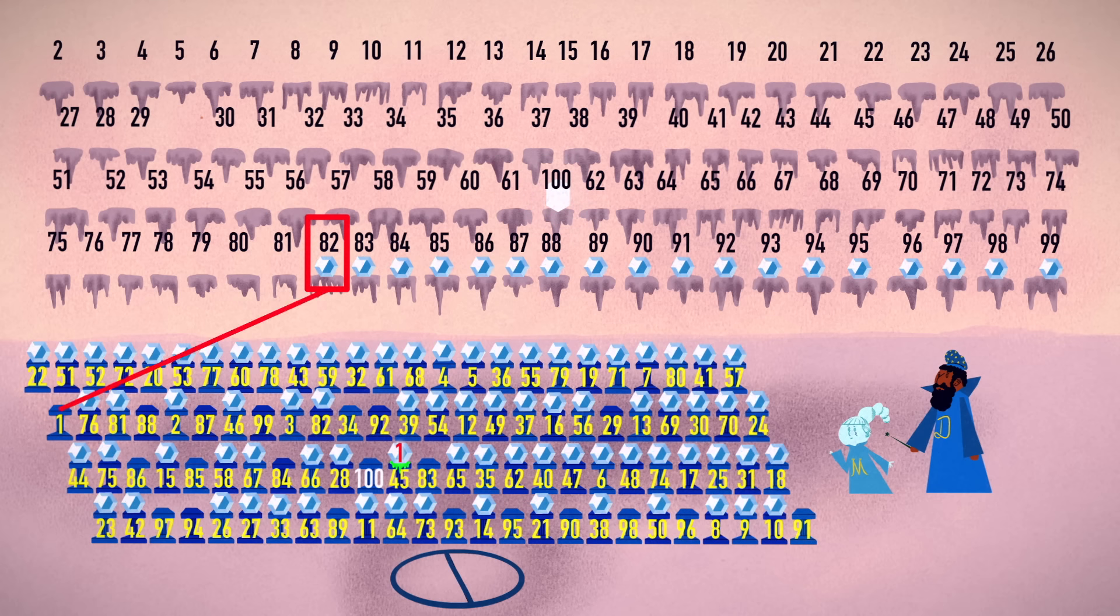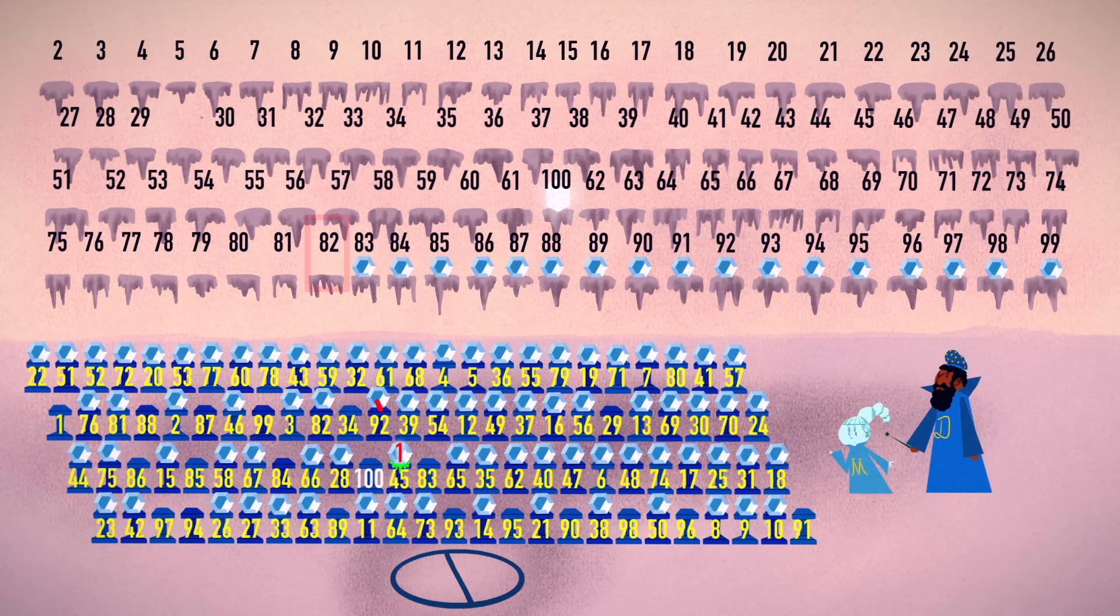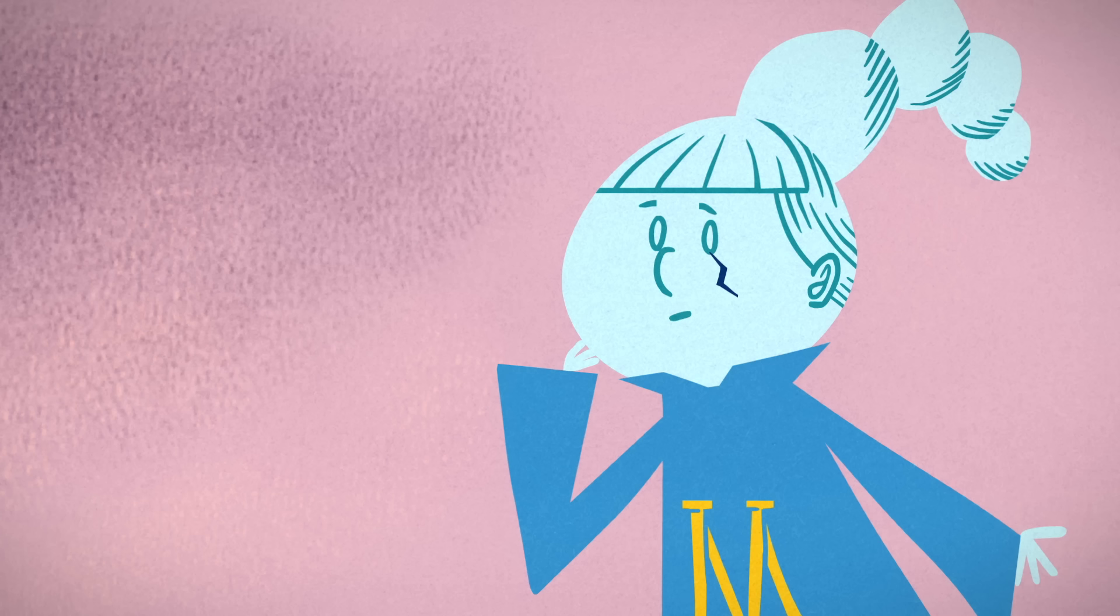Pedestal 1, you win. Pedestal 100, you lose. Any other, you continue the process.